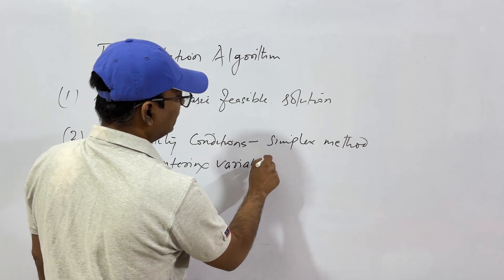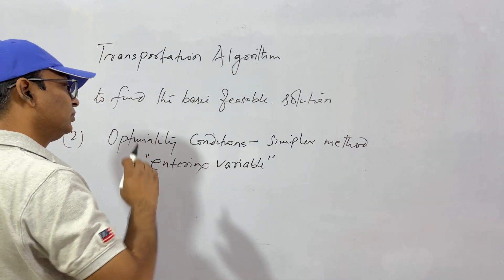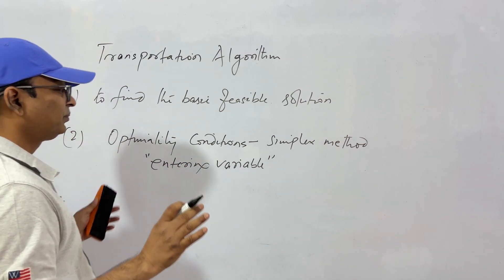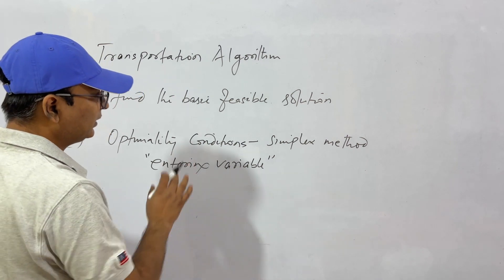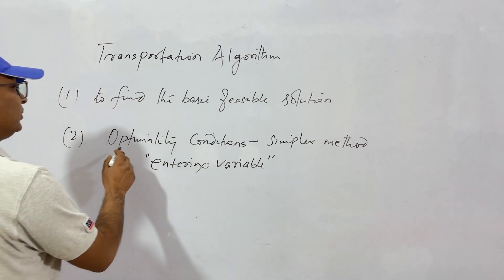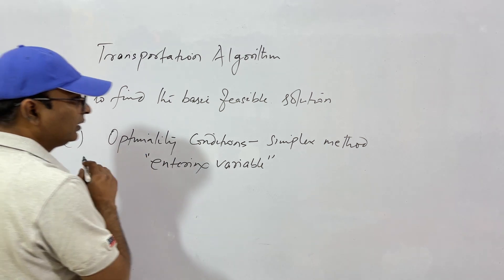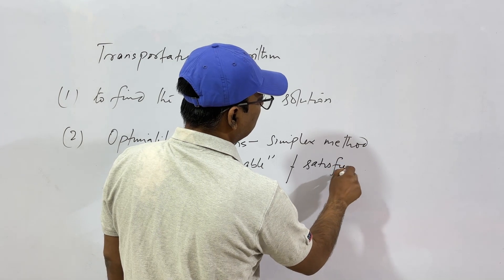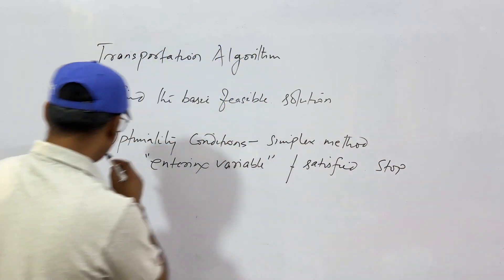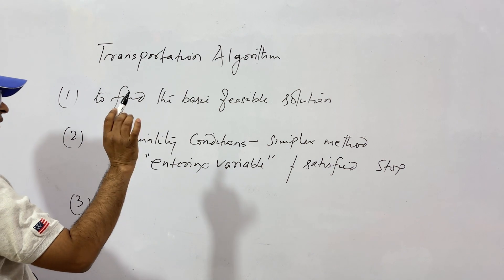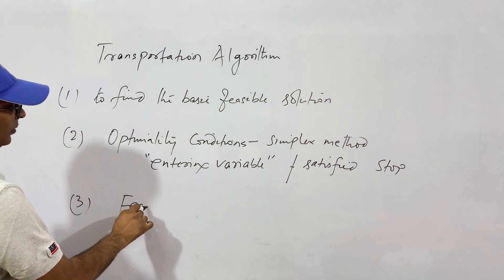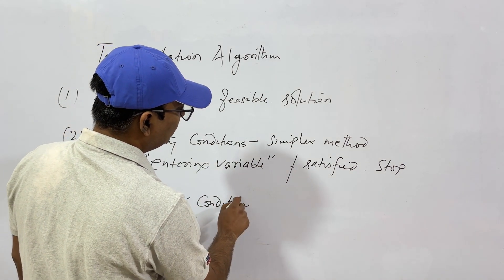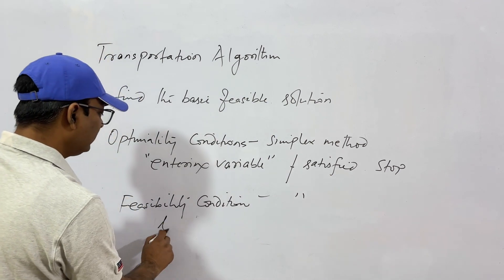If you've forgotten what these terms are, you can go back to the video on Simplex method. But even without that, you will understand — I will deliver everything here also. We find the entering variable. If the optimality condition is satisfied, just stop; else go to step 3. If not satisfied, use the feasibility condition of the Simplex method to find the leaving variable.